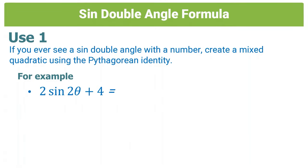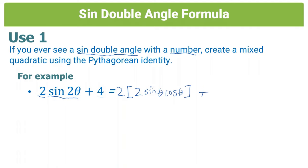Let's go on to a more complex example. We still have sin 2θ but now with a 2 in front and the number is 4. It's still the same type — a sine double angle with a number. Step one: use the formula to take apart sin 2θ. With the 2 in front, it becomes 2(2 sin θ cos θ). The angle is halved, and we write 4 as 4 × 1 to bring in the Pythagorean identity.